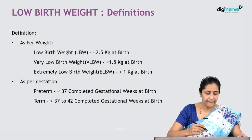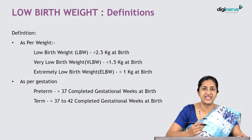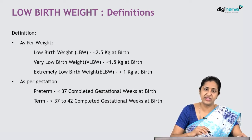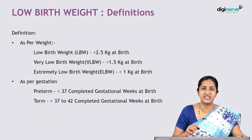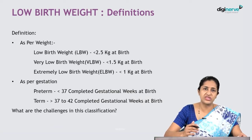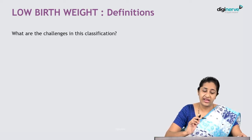However, classifying neonates by birth weight alone revealed a significant problem regarding maturity. This led to a classification based on gestation: a preterm neonate is one born before completing 37 gestational weeks, while a term baby is one born after completing 37 gestational weeks. But what are the challenges with these two separate classifications?